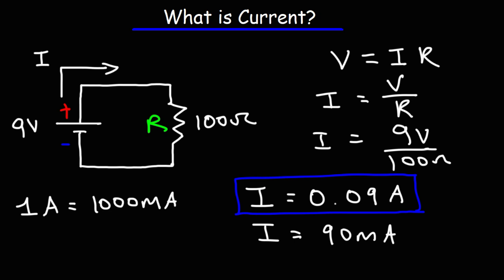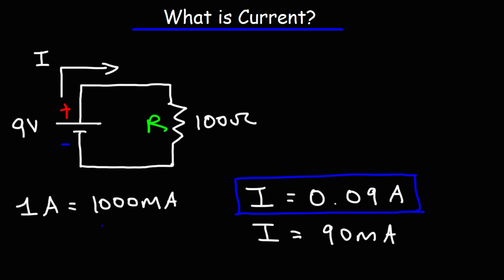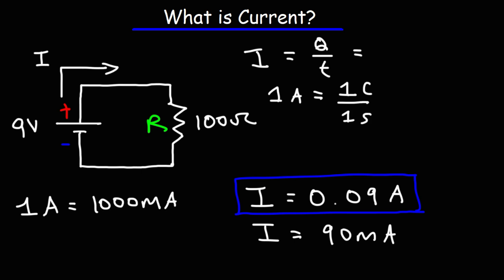A current of 0.09 amps — what does that mean? The electric current flowing in a circuit represents the flow of electricity; it tells you how many electrons per second are flowing at any given point. Even though you can calculate current by taking the voltage and dividing by the resistance, you can also describe current in terms of the rate of charge flow. Current is equal to Q divided by T, where current is measured in amps, Q (the electric charge) is measured in coulombs, and T is measured in seconds. A current of one amp means one coulomb of electric charge is flowing every second — current is the rate of electric charge flow.